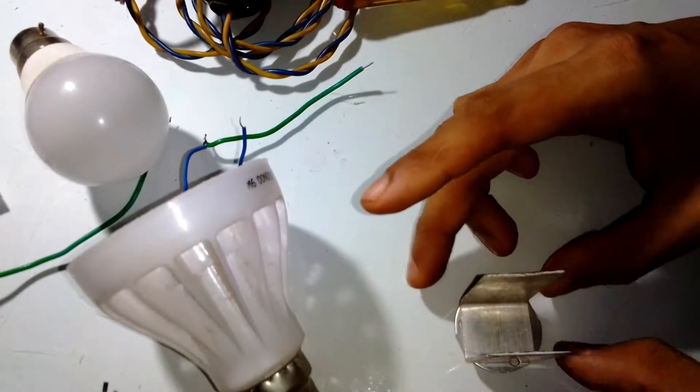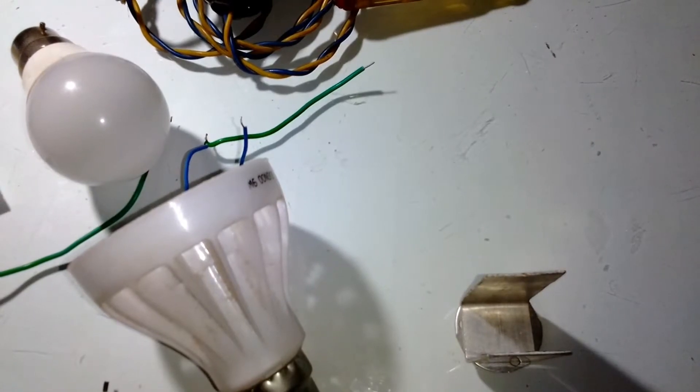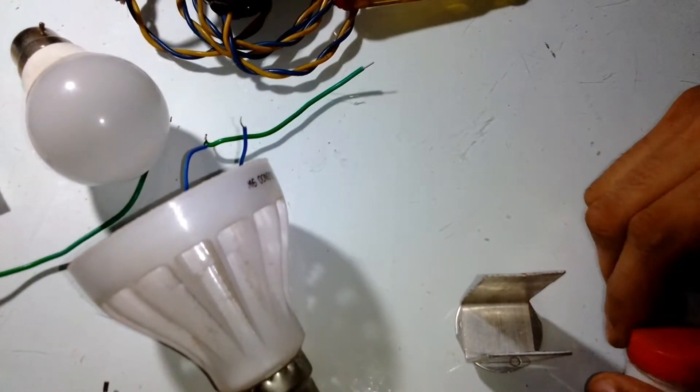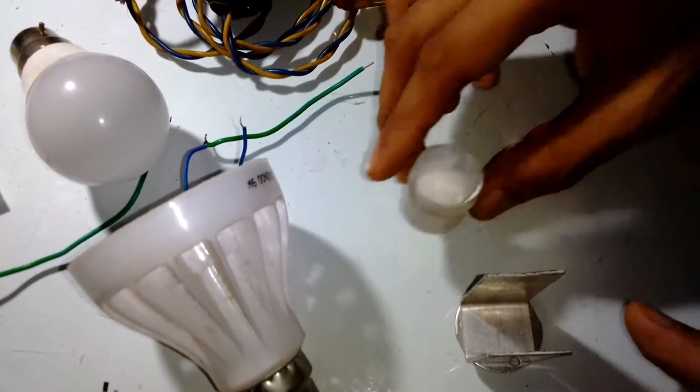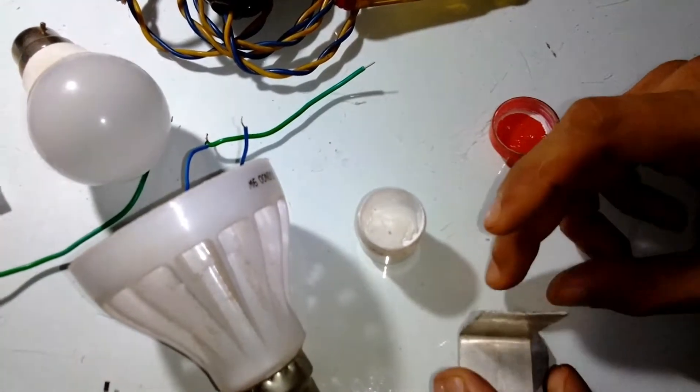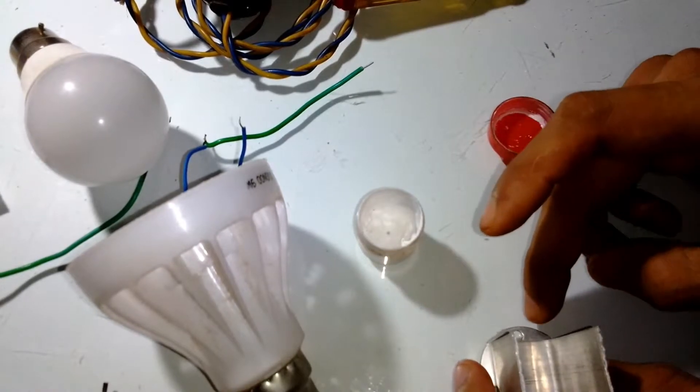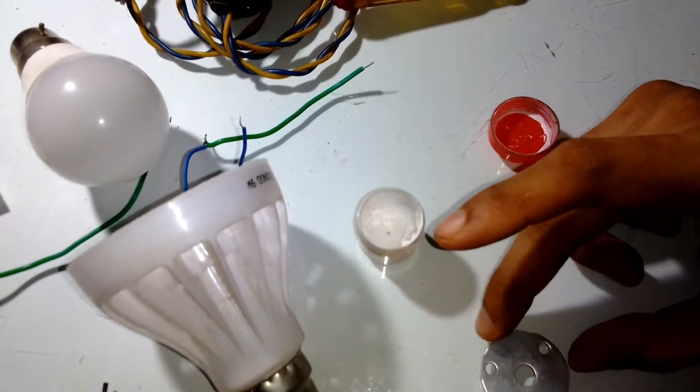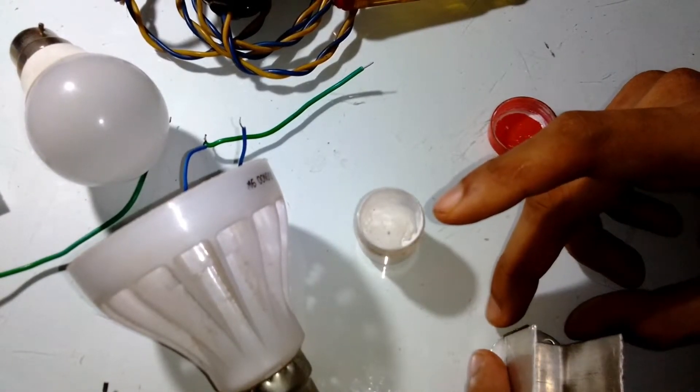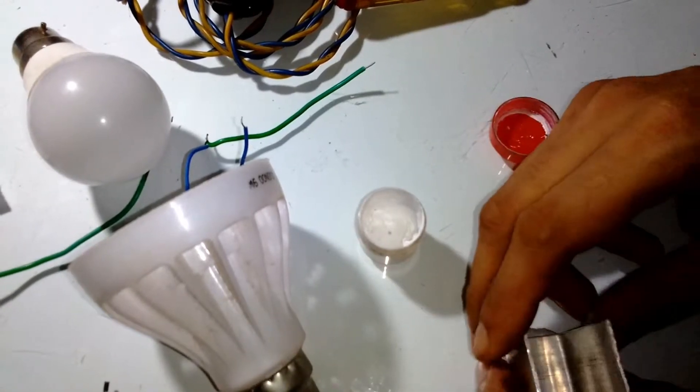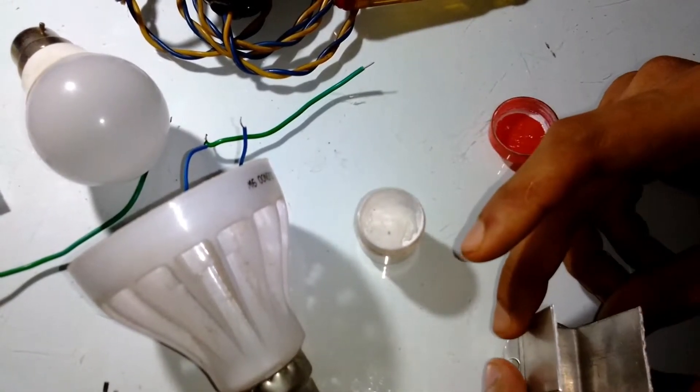I'm using this white thermal compound, thermal conductive compound, so that it doesn't heat up. I'm going to use the thermal compound in the middle and from the side I'm going to use epoxy glue to set it.